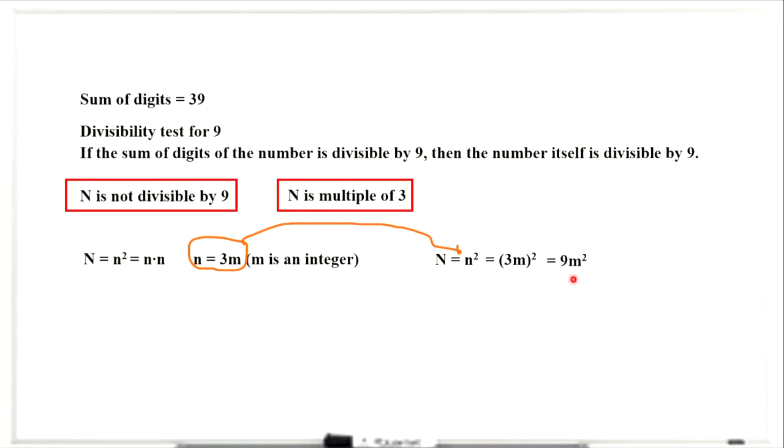It means that N is a multiple of 9, so N must be divisible by 9. Comparing these two statements, we can conclude that our number cannot be the square of an integer.